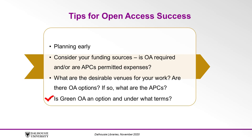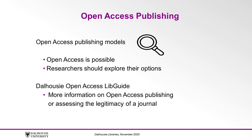If an open access journal is not available or feasible, is green open access an option with your desired journals and under what terms? The range of open access publishing models means that open access is possible in most circumstances and researchers should be encouraged to explore their options. For more information on open access publishing or assessing the legitimacy of a journal, consult the Dalhousie Open Access LibGuide. You can find the link to this guide in the description below.